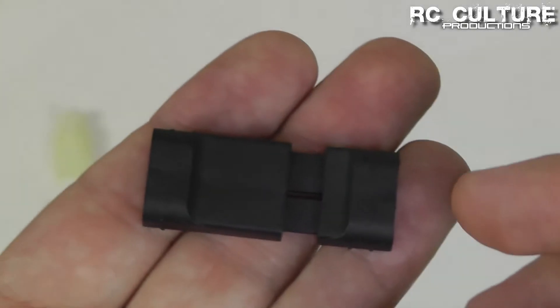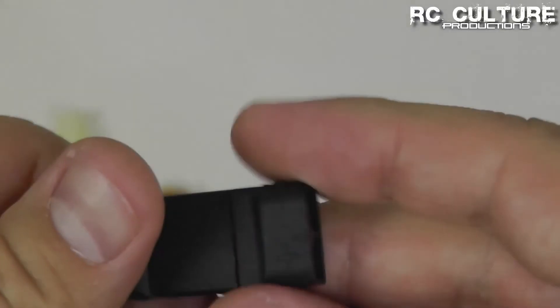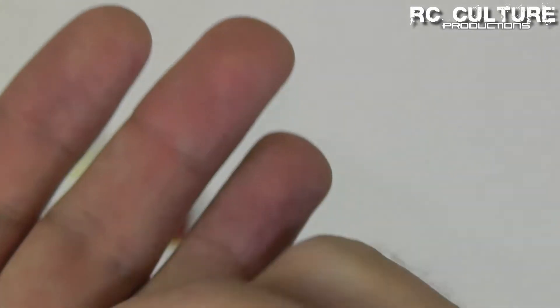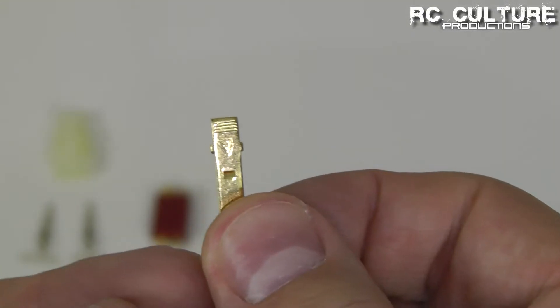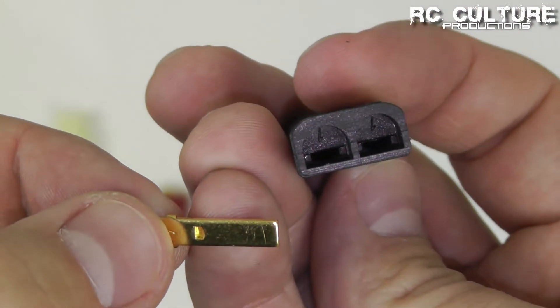The next style of connector that came along was the Traxxas style connector and you can see here again we have a male end and a female end and they just slide together. What you do is you solder your wires to these pins which you then insert into the ends here.